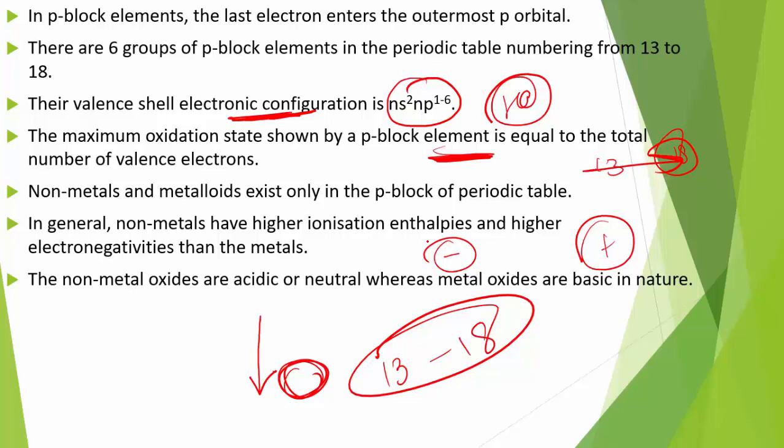Compounds formed by highly reactive non-metals with highly reactive metals are generally ionic due to large differences in their electronegativities. The non-metallic to metallic character transition can be best illustrated by the nature of oxides these elements form.